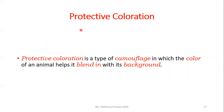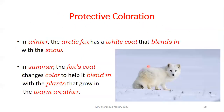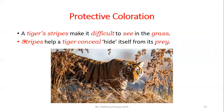A second type is protective coloration, which is a type of camouflage in which the color of an animal helps it blend in with its environment. For example, the arctic fox has a white coat in winter that blends in with the snow, and in summer its coat changes color to blend in with the plants. A tiger's stripes make it difficult to see in the grass and help it conceal itself from prey.